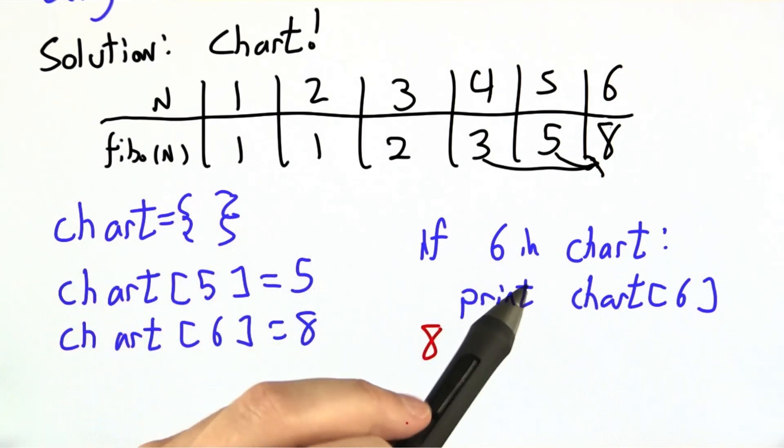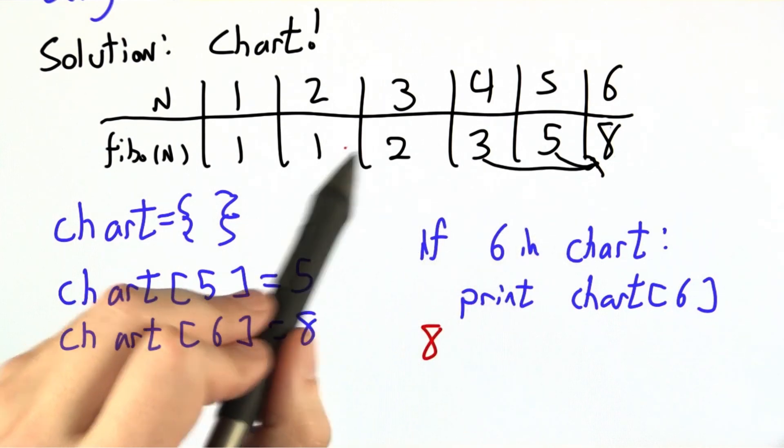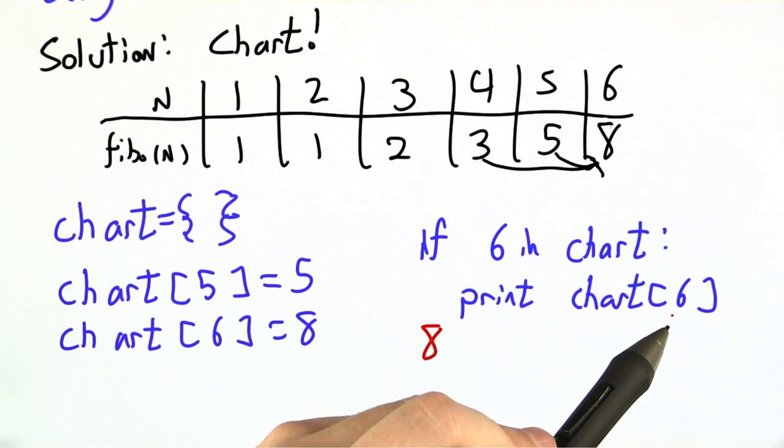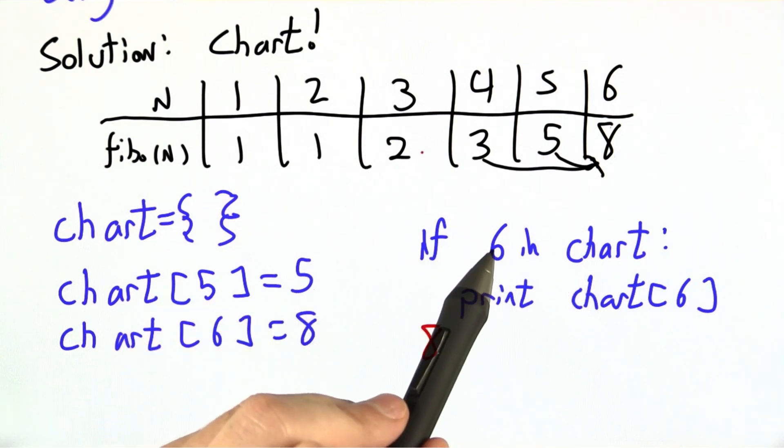One of the keys to memoization is looking to see if you've already done the work and written it down. If you have, great, you can just reuse it. But if you haven't, you're going to have to go and compute it manually the first time.